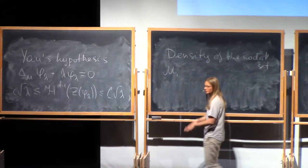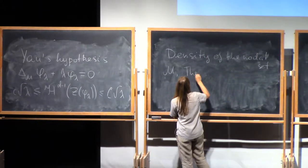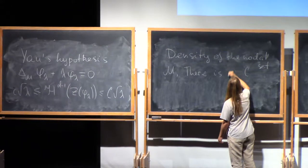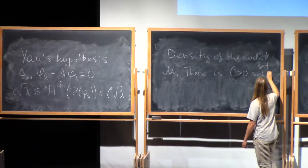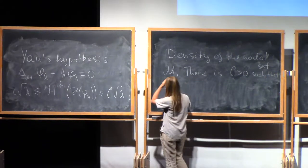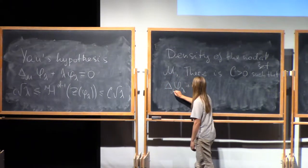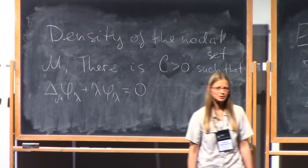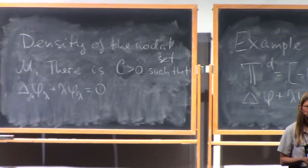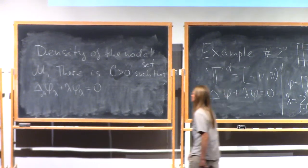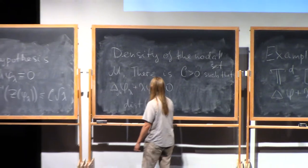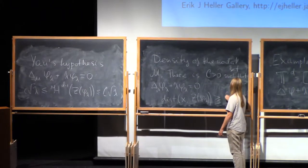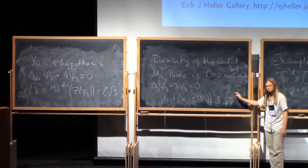So we have our compact manifold and claim that there is a constant. And if we take an eigenfunction corresponding to eigenvalue lambda, then the zero set of this eigenfunction is dense on scale 1 over square root of lambda. In other words, the distance from any point on the manifold to the zero set is less than or equal to constant over square root of lambda.